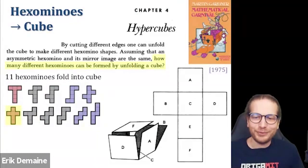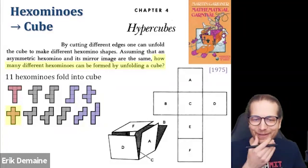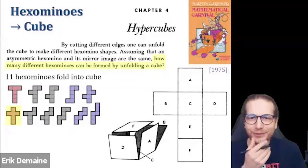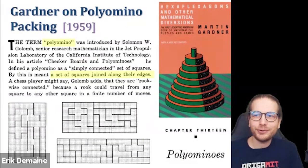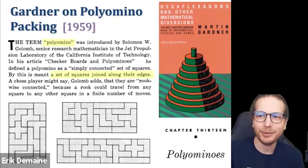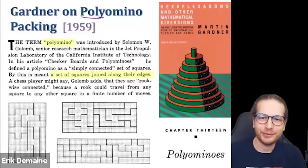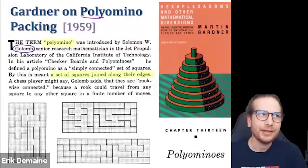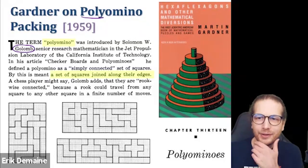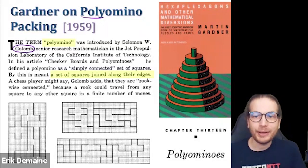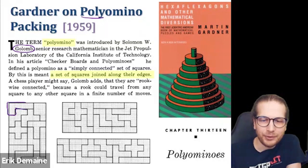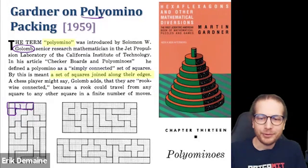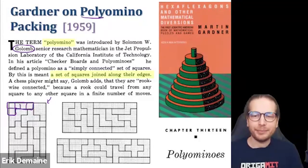The answer turns out to be 11 of the 35 hexominoes — sorry to spoil the surprise, but it's fun to figure them out. With the general class of polyomino shapes — any number of squares glued together — Sol Golomb introduced this concept, but it really got national attention thanks to Martin Gardner's 1959 article. One fun thing you can do with polyominoes is pack them; for pentominoes you can pack all of them perfectly into a rectangle.